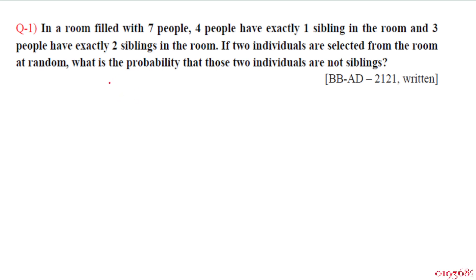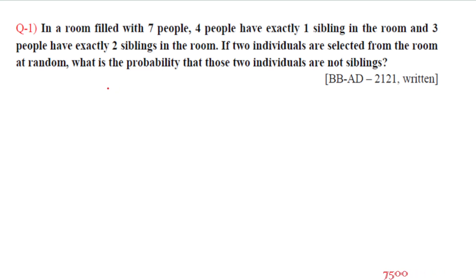In a room filled with seven people, four people have exactly one sibling in the room and three people have exactly two siblings in the room. If two individuals are selected from the room at random, what is the probability that those two individuals are not siblings?